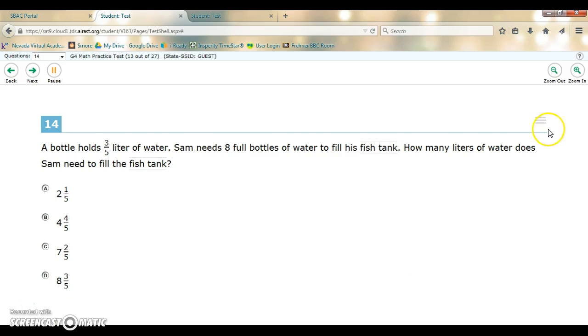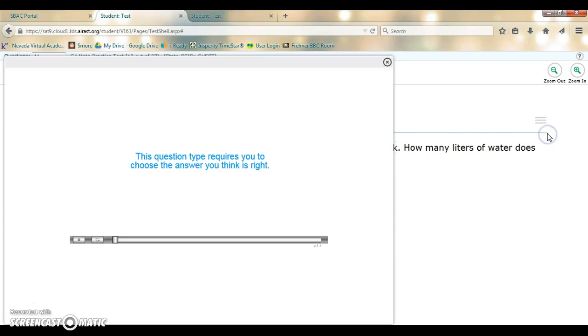So when you come to a question, you'll see these three lines right here, and this is your menu for each question. When you click on it, you'll see the submenu options that I mentioned: tutorial, notepad, mark for review, and strikethrough. If you click on tutorial,